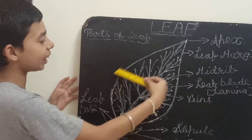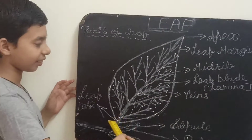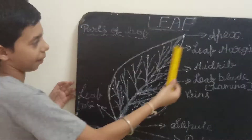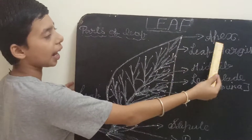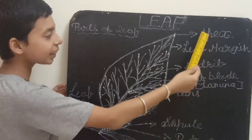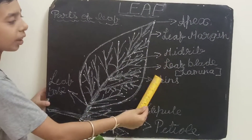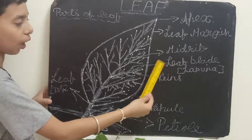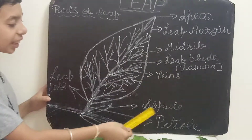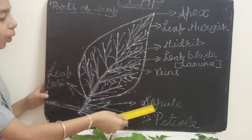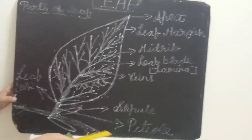See, this is the leaf which I have drawn here. The parts of leaves are: apex, leaf margin, midrib, leaf blade or lamina, veins, stipule, petiole, and leaf base.